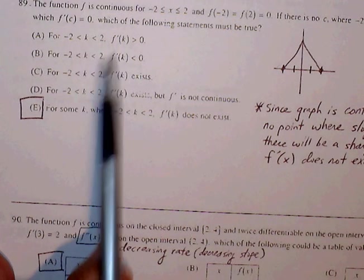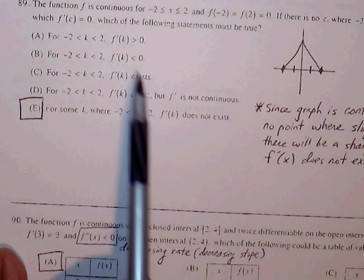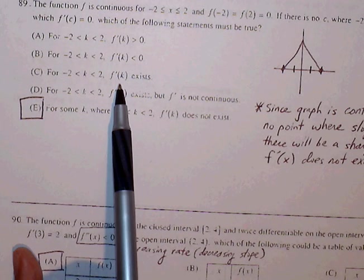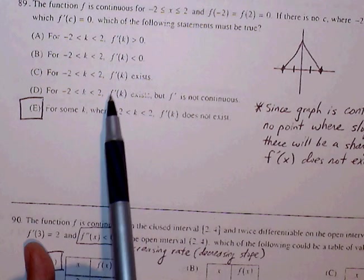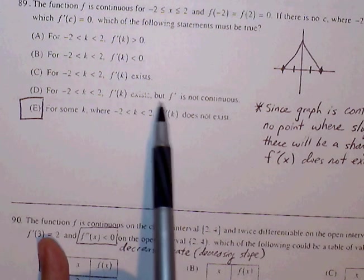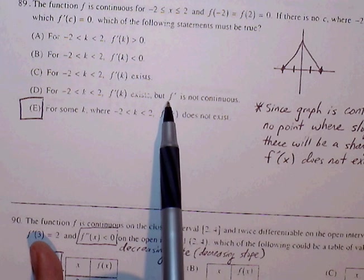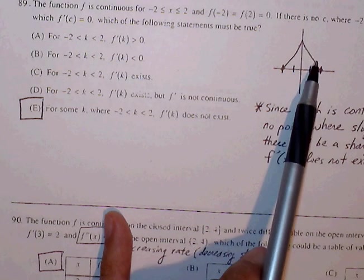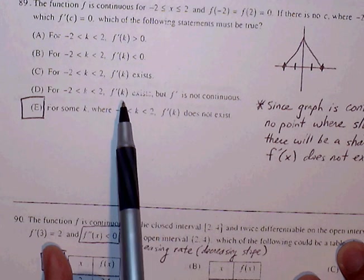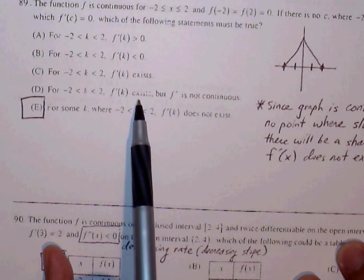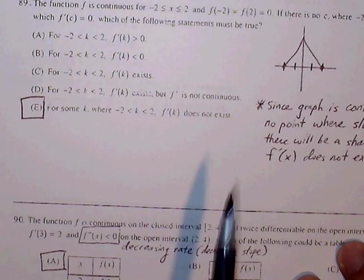Again, let's see, part A and B we can take out because the slope is going to have to change from positive to negative at some point, so those two are out. f'(k) exists, so we know that can't be true, especially if we're going to have a sharp point. And then f'(k) exists, but f' is not continuous. And this, we know f' is going to be continuous because we have a point that exists. And also, if f' exists, if the slope exists, then there's no way that f' is not continuous, so we know part D is out.